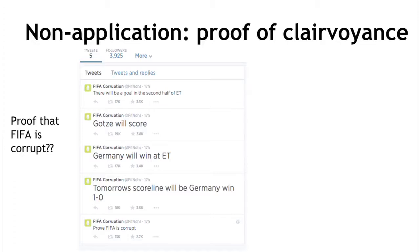About a month ago during the World Cup final, somebody had tried to do this and claimed to prove that FIFA was corrupt. They showed a Twitter account that had tweeted a bunch of outcomes that happened during the game — for example that Germany won, that Mario Götze would score — and proved they had tweeted this before the game actually happened. For a moment it looks like this proves that either this person could tell the future or that the match was fixed and they must have known what was going to happen ahead of time.